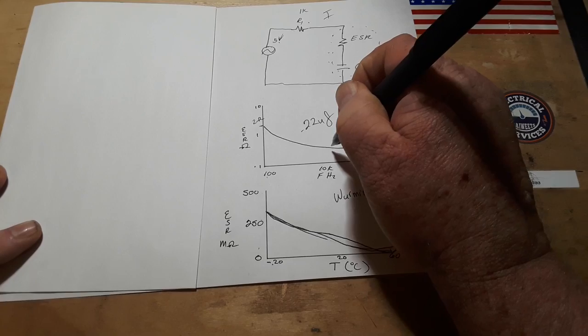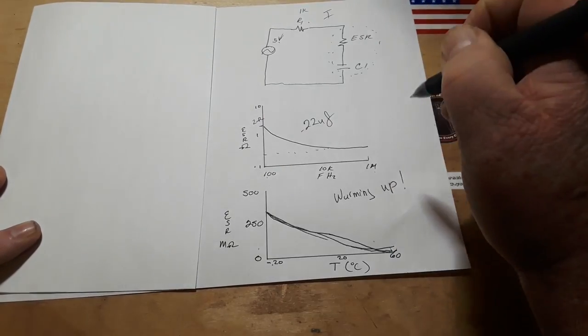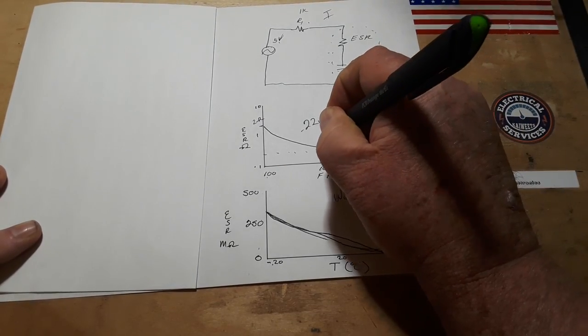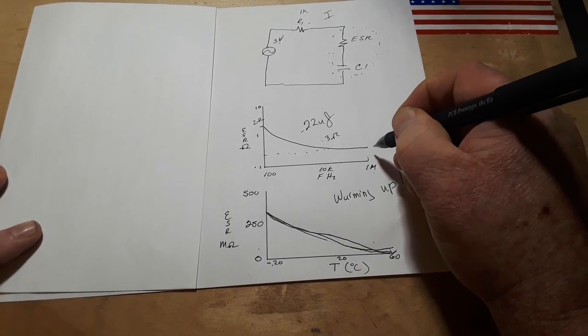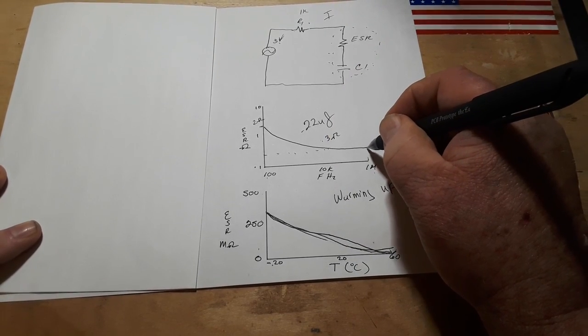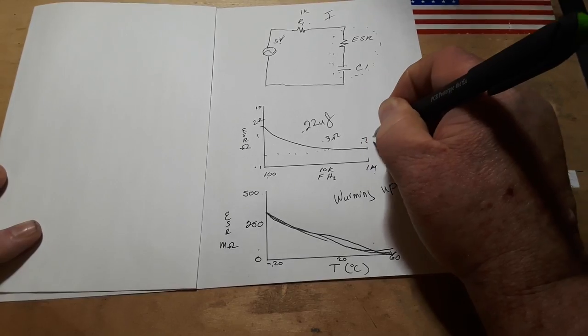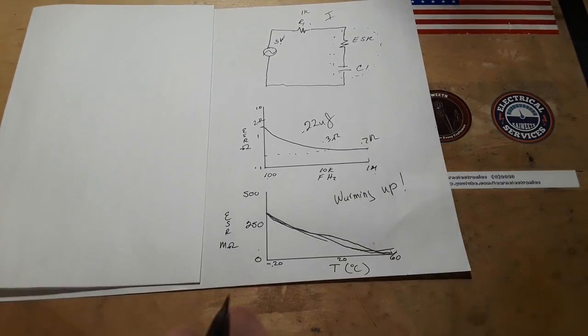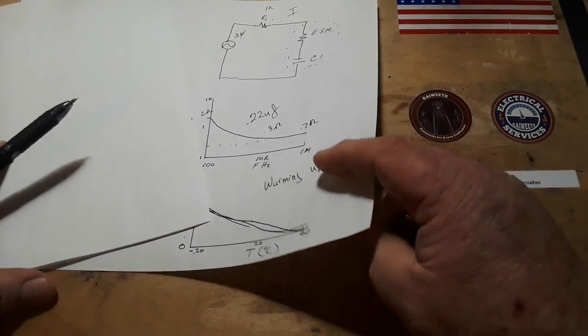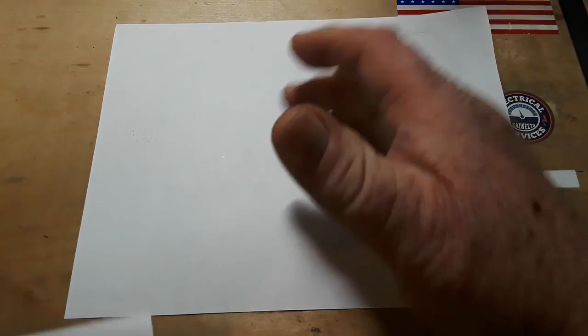You'll notice that we have an ESR here of about 2 ohms at 100 hertz. Down here at 10k, we're closer to 0.3 ohms. And here at 1 meg, it hasn't gone down much, let's call it 0.2 ohms. So they're frequency and temperature dependent. That's all I wanted to tell you.